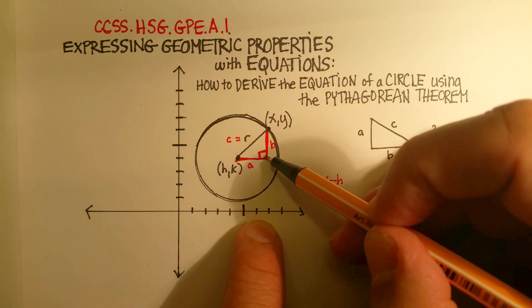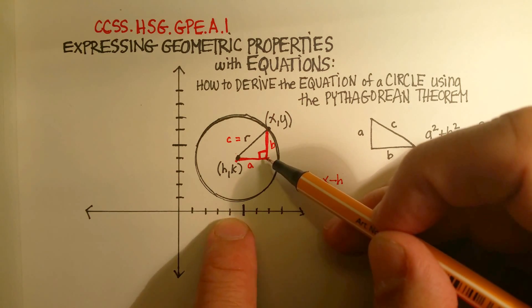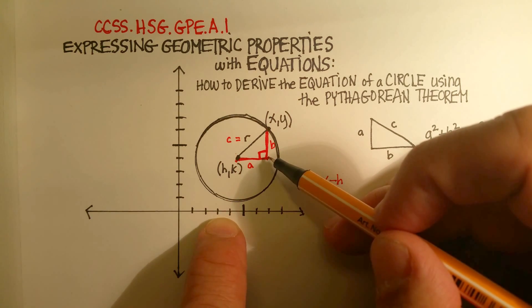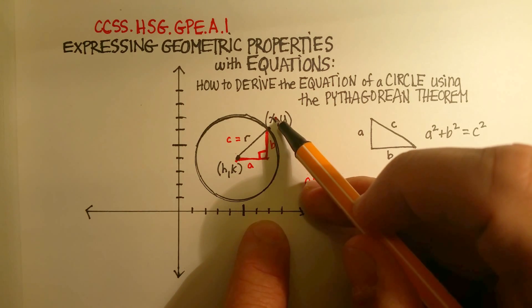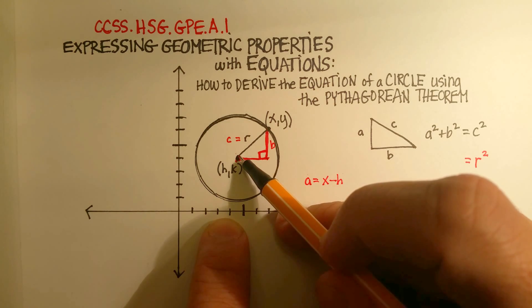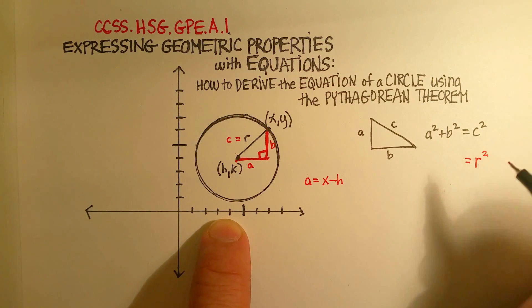For example, if this x were seven and this h were four, the distance here would just be 7 - 4, or three units. So basically x minus h.